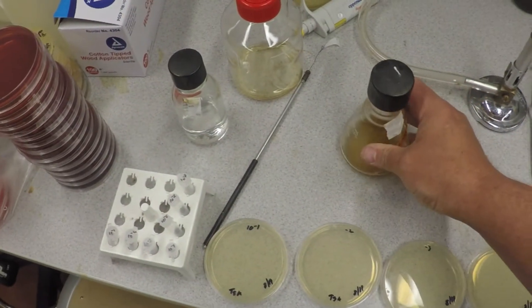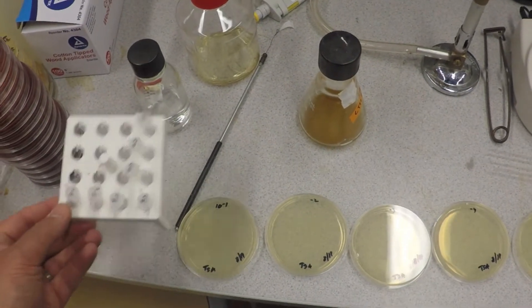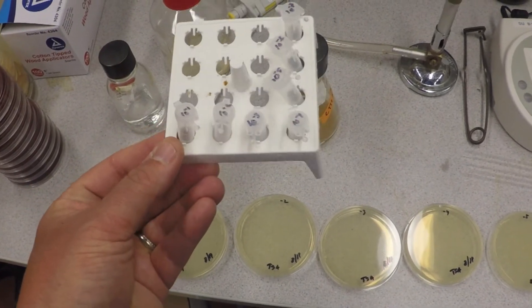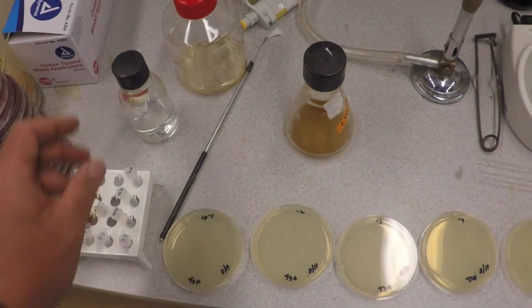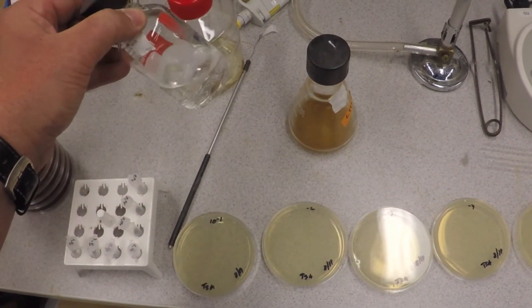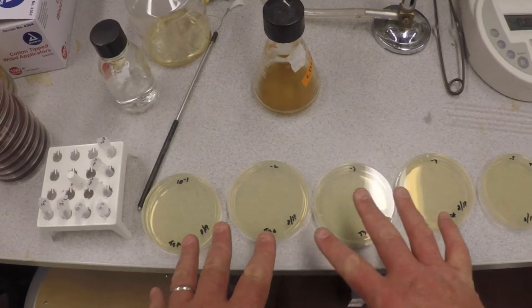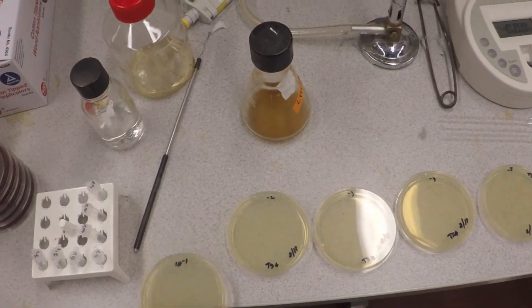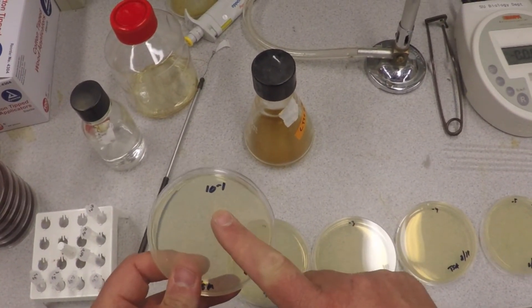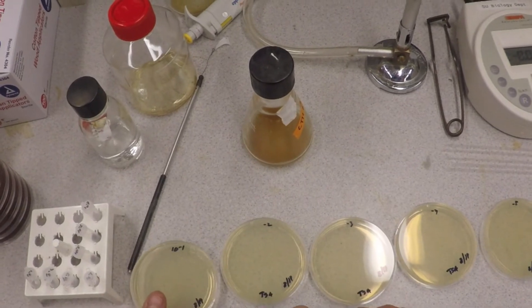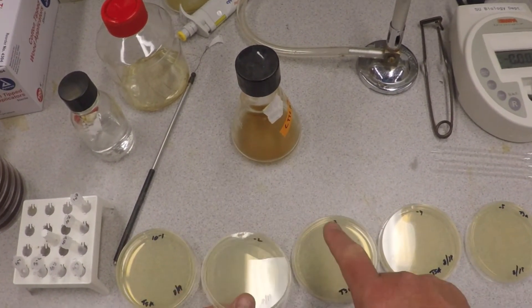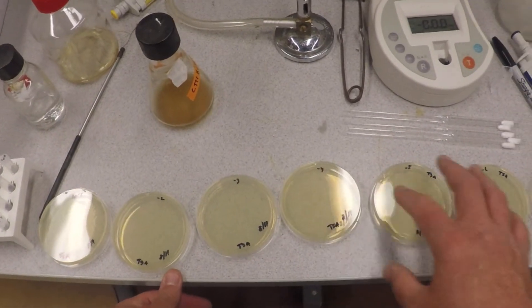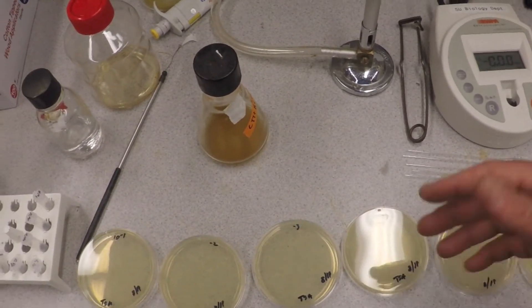We're going to go through and show you how that's done. I've got a bunch of pre-labeled little eppendorf tubes, we're going to use a thousand microliters instead of one mil. I've got my diluent and I got my plates already laid out and they're labeled - ten to the minus one which is one to ten, ten to the minus two is one to a hundred, one to a thousand, one to ten thousand, etc.